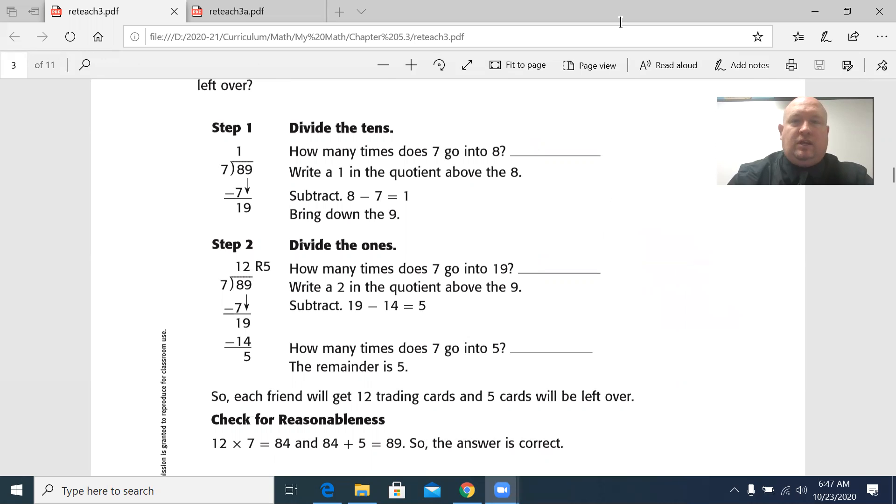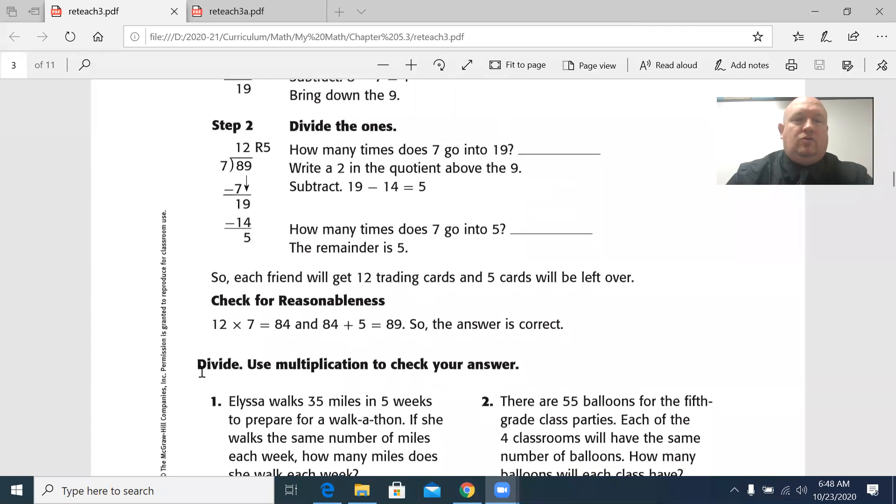12 times seven is 84. 84 plus five is 89. So the answer is correct. The best way to check for reasonableness in a division problem is to multiply through the inverse operation. Same if you were doing multiplication. The best way to check is to divide.